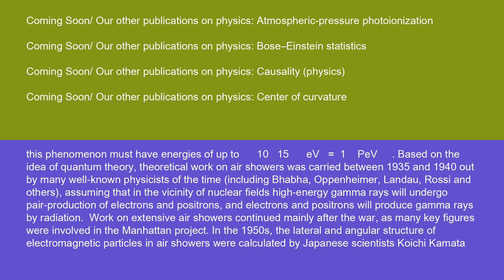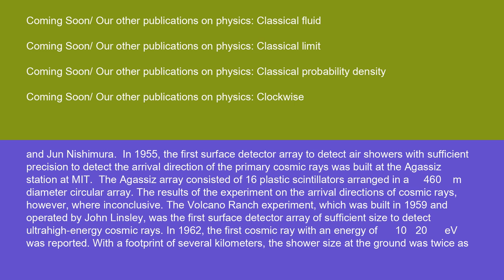In the 1950s, the lateral and angular structure of electromagnetic particles in air showers were calculated by Japanese scientists Koichi Kamata and Jun Nishimura. In 1955, the first surface detector array to detect air showers with sufficient precision to detect the arrival direction of the primary cosmic rays was built at the Agassiz station at MIT. The Agassiz array consisted of 16 plastic scintillators arranged in a 460 m diameter circular array. The results of the experiment on the arrival directions of cosmic rays, however, were inconclusive.